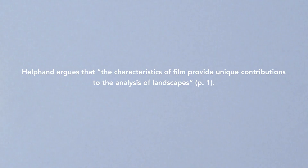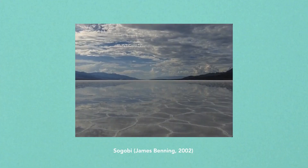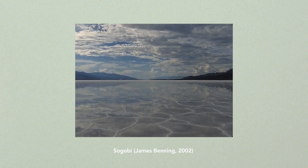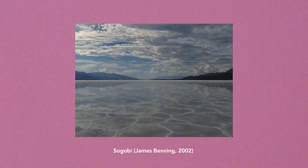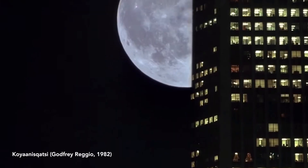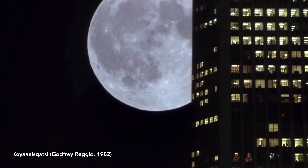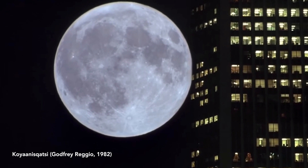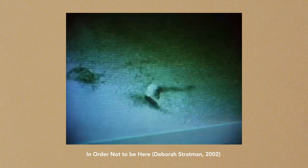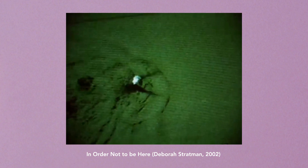The landscape experience is inherently cinematic. Helfand argues that the characteristics of film provide unique contributions to the analysis of landscapes. Whilst this is a sound observation, I would also add that the characteristics of the landscape experience present the opportunity to exalt the distinct ontology of film. Landscape films not only consider landscapes a worthy subject to meditate on, but they also consider cinema a worthy medium to express ideas that simply cannot find form in any other way. In this vein, the value of landscape films — and indeed experimental films more broadly — rests in their ability to foreground cinema as a medium itself.